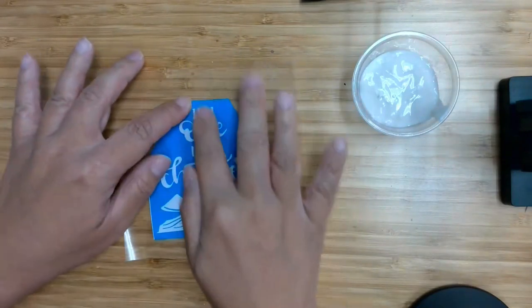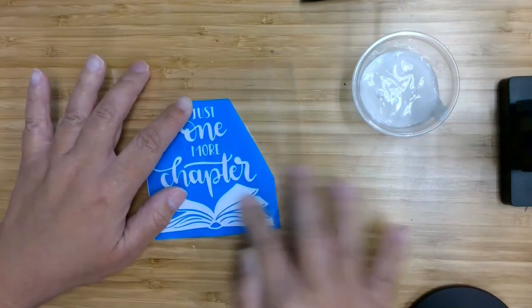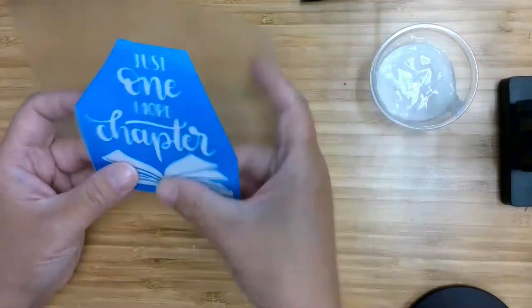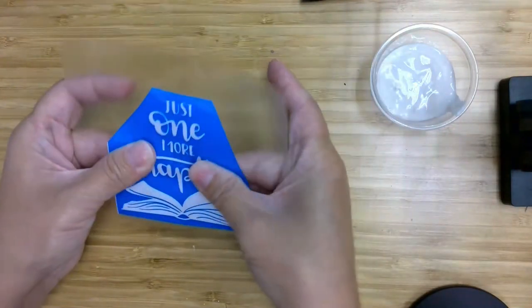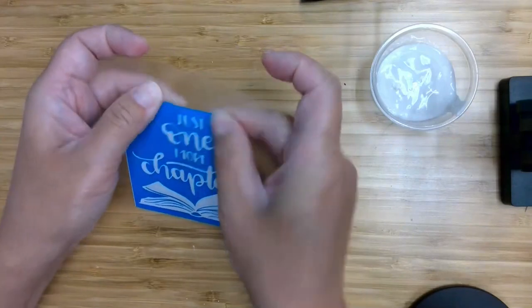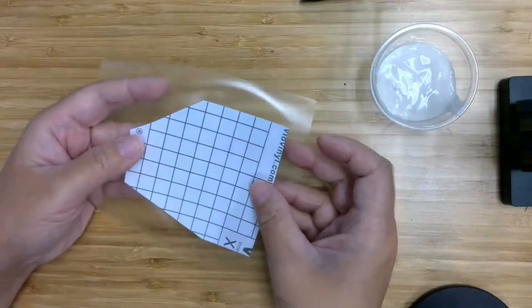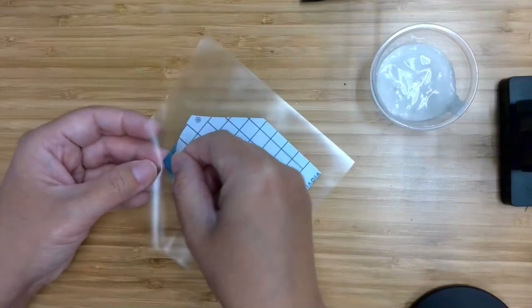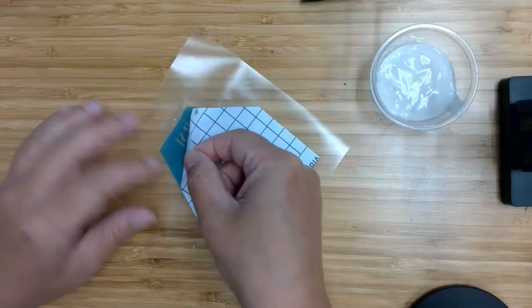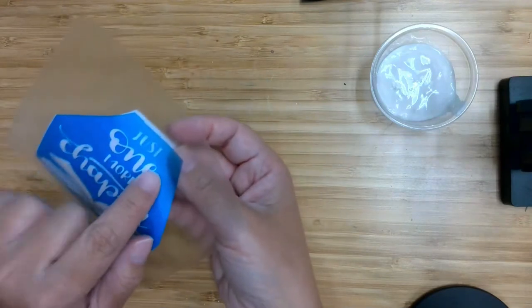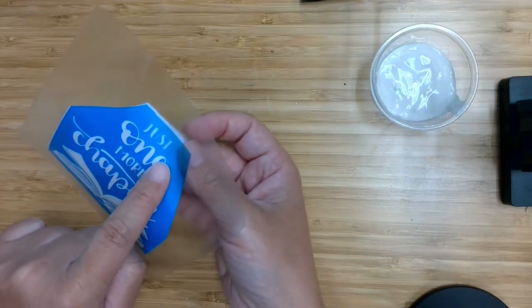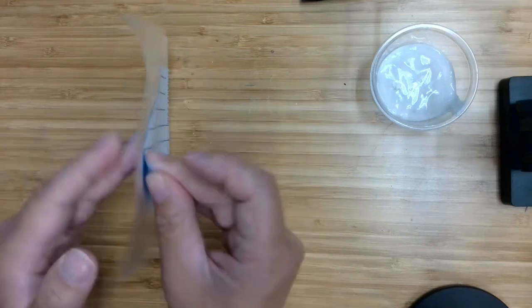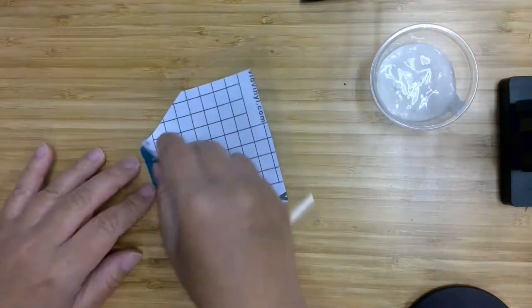So now we want to peel the paper backing off of the stencil, so we should just be left with the blue vinyl. And be careful because there are some spots like this little space here in the E that will want to stay stuck to the paper, so make sure that those are coming up when you pull the paper back.